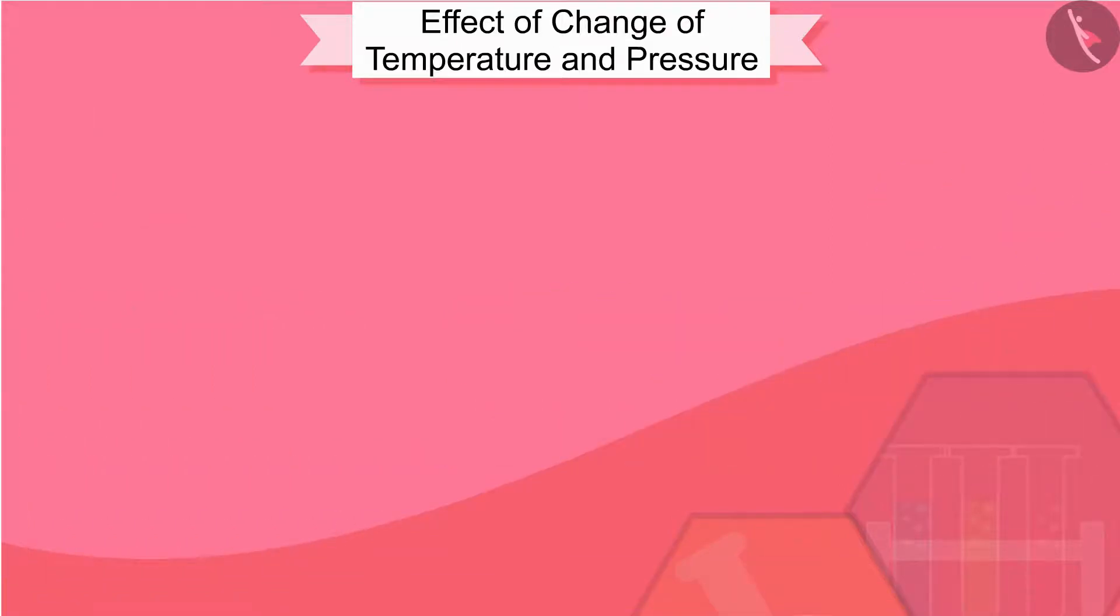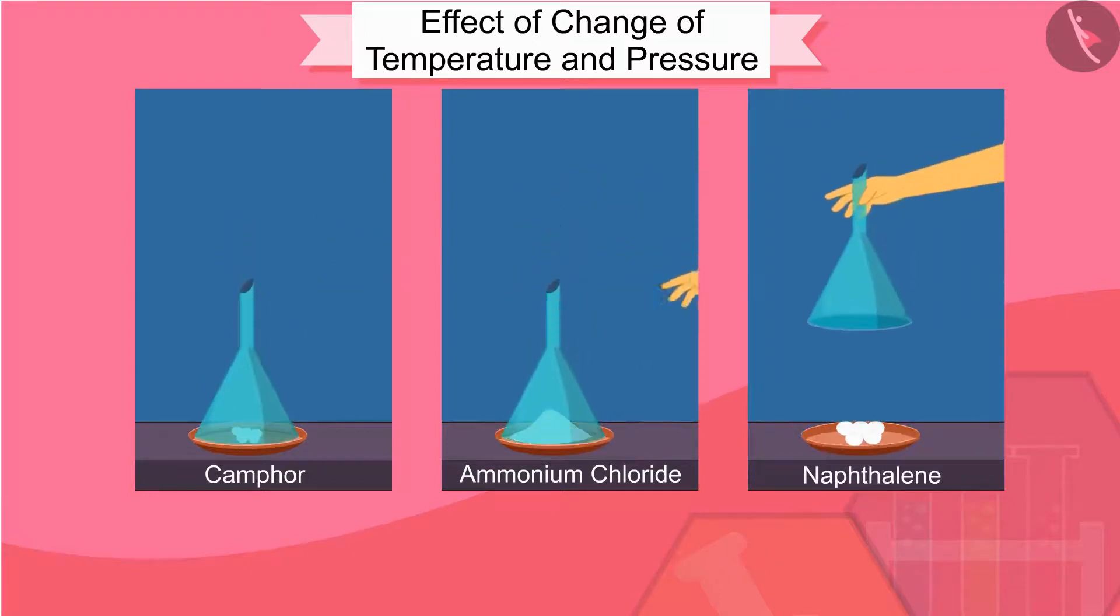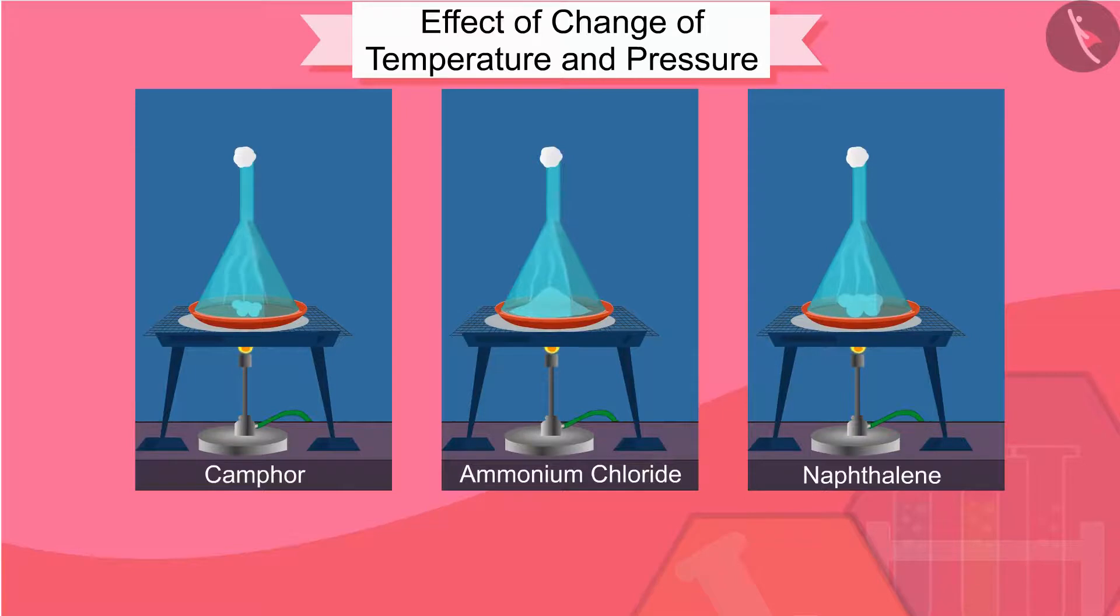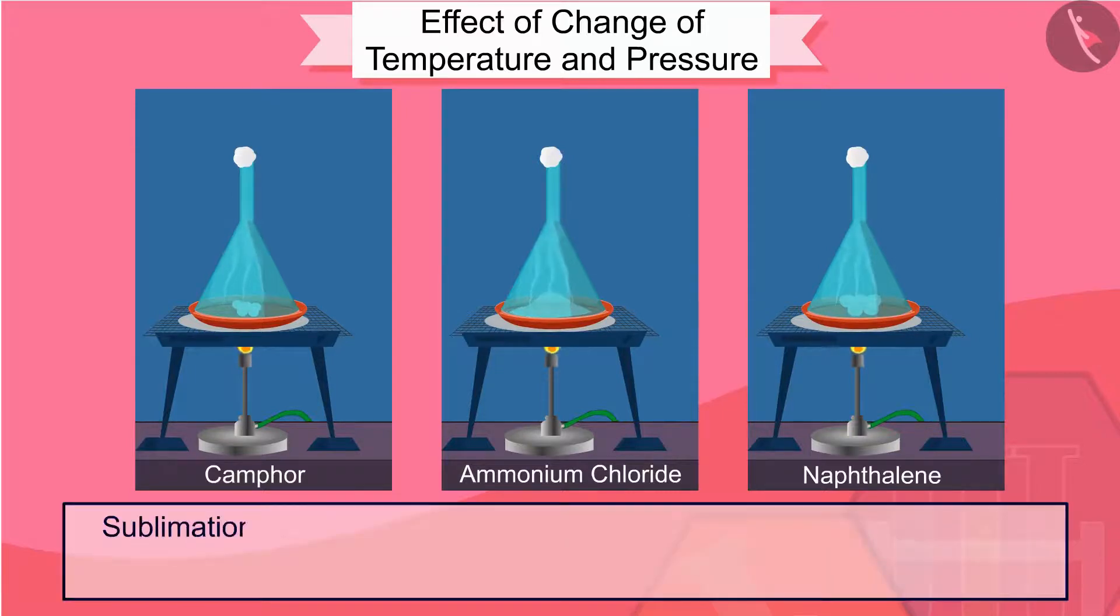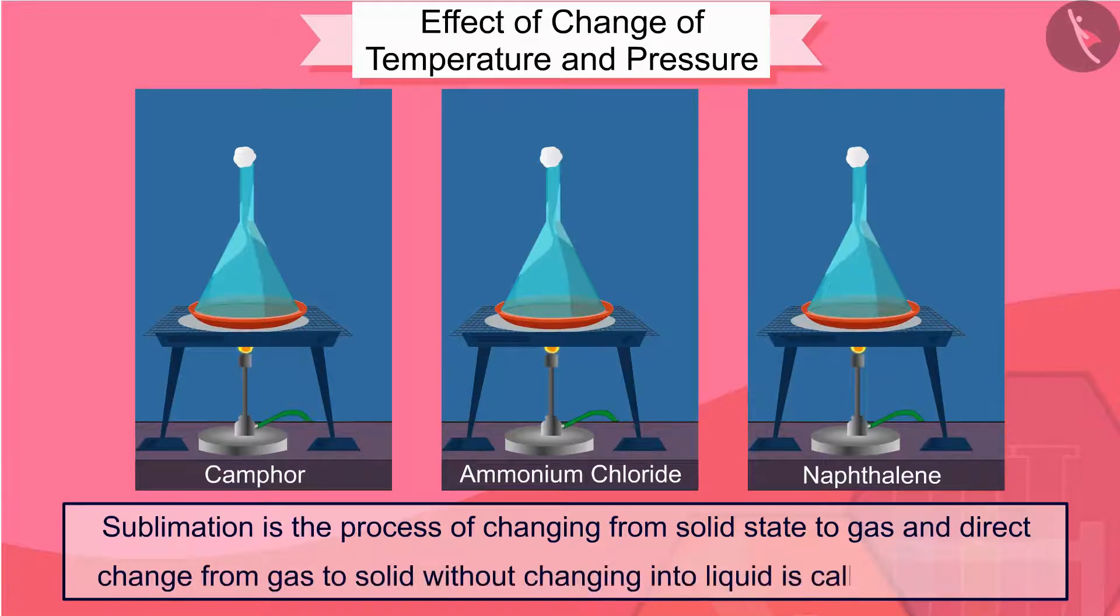No, there are some substances such as camphor, ammonium chloride, and naphthalene that convert directly from the solid state to gas and back to solid without being converted into a liquid state. Sublimation is the process of changing from solid state to gas, and direct change from gas to solid without changing into liquid is called deposition.